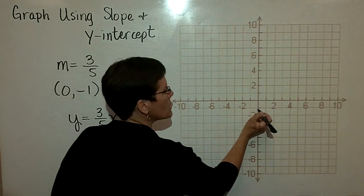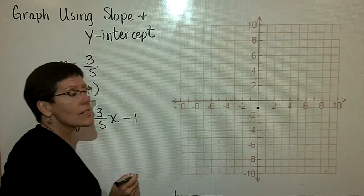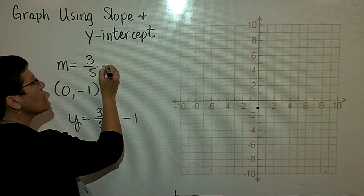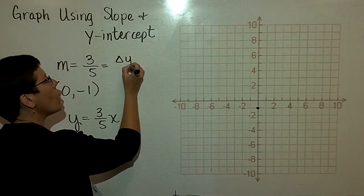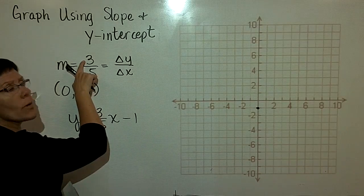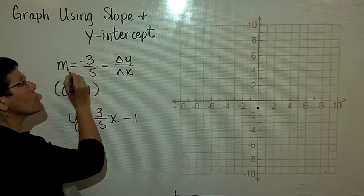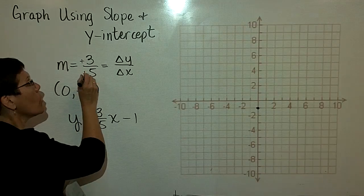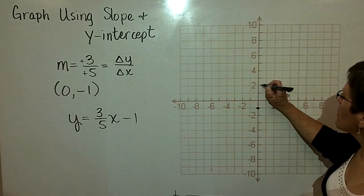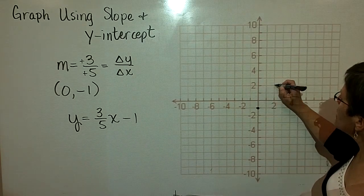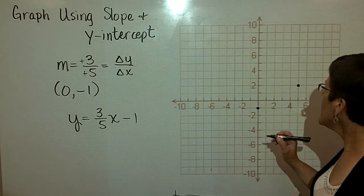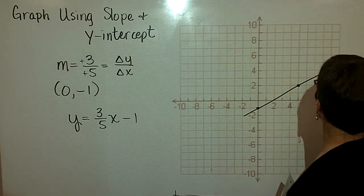If the y-intercept is (0, -1), that's that ordered pair. From there, you know that the slope, which is 3/5, is defined as the change in y over the change in x. So in this particular circumstance, in the y direction, you want to go a positive 3, and in the x direction, you want to go a positive 5 from this point. So let's go up 3, and then over 1, 2, 3, 4, 5, and put another ordered pair down.